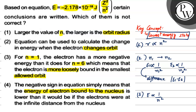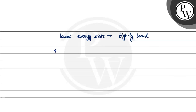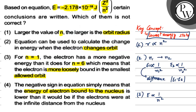But we will also check option 4. Option 4 says the negative sign in the equation simply means that the energy of the electron bound to the nucleus is lower than it would be if the electrons were at an infinite distance from the nucleus. This is the right conclusion. Because in general, we call the energy zero at infinite distance. With respect to that, we take all the energies to be negative. So the negative sign simply means the energy of the electron is bound to the nucleus and lower than if the electrons were at infinite distance.